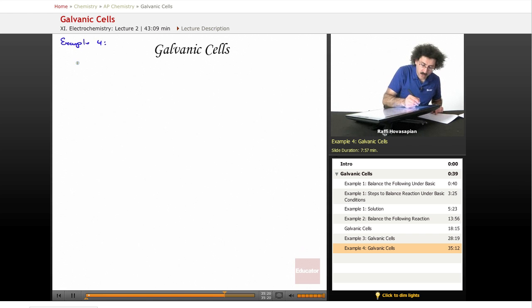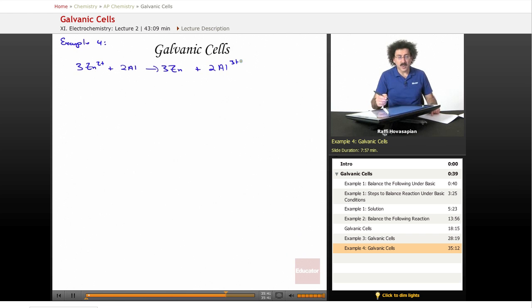Let's use our example: 3 Zn²⁺ + 2 Al goes to 3 zinc metal plus 2 Al³⁺. Notice what's happening here. Zinc ion is turning into zinc metal. Aluminum metal is turning into aluminum ion.